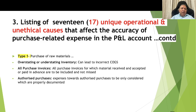Continuing purchase of raw material causes: Number 6, overstating or understating the inventory can lead to incorrect COGS (cost of goods sold). Number 7, all purchase invoices for which material has been received and accepted or paid in advance are to be included and not missed. Number 8, expenses towards authorized purchases only to be considered, which are properly documented in terms of inwards and quality acceptance.